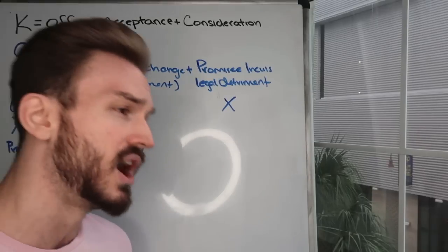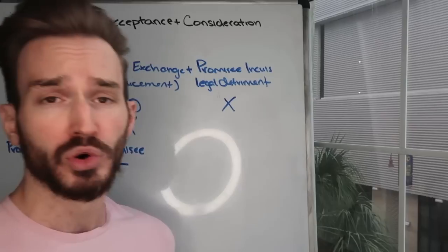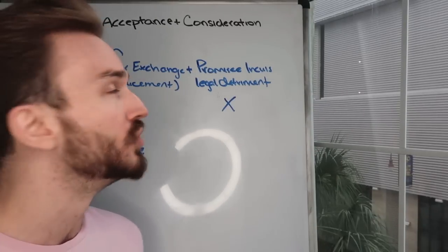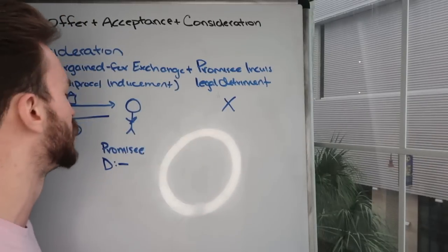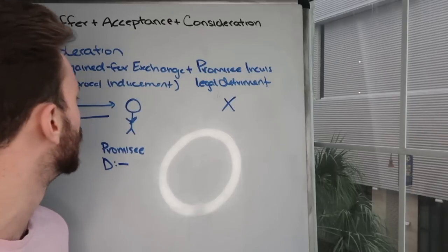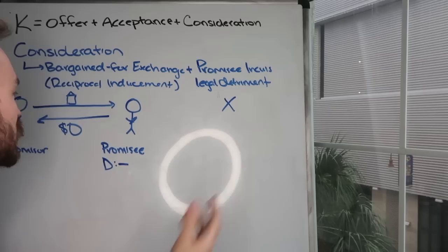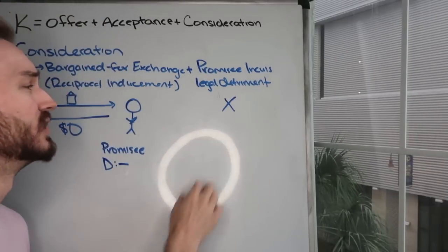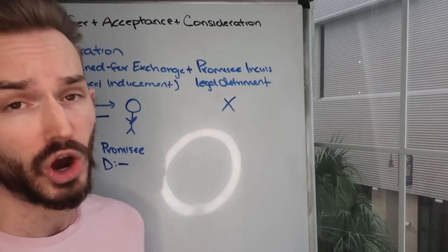There are ways this could be enforced — maybe promissory estoppel or quasi contracts — but not as a traditional enforceable contract. Perhaps promissory estoppel if we had detrimental reliance. But under a traditional enforceable contract, this is not going to be consideration because the promisee is not incurring a legal detriment. And obviously, my giving you the dry erase marker can't be induced by anything since you're giving me nothing. So we have no inducement, no bargain for exchange — that is a gift promise.